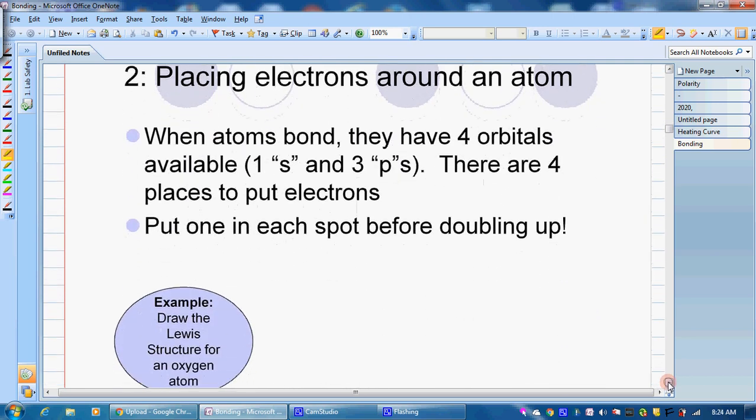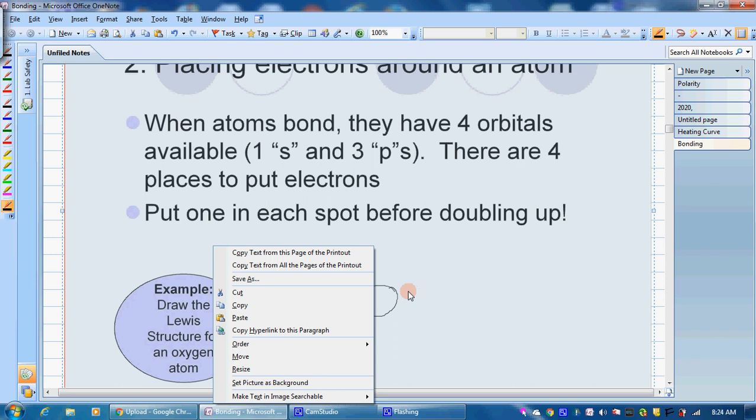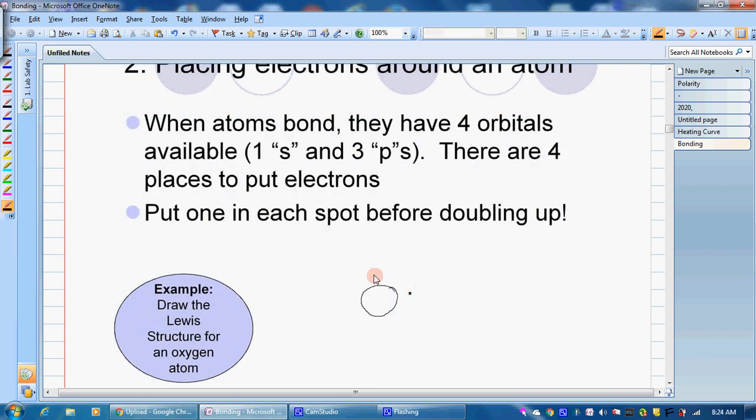When we put our electrons around, we talked about this last chapter. Really what we're showing is our S and our three P's. So if we have oxygen here and we know that there's six electrons, a lot of times we will say that we need to put one electron on each side before we double them up.